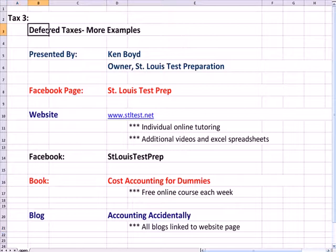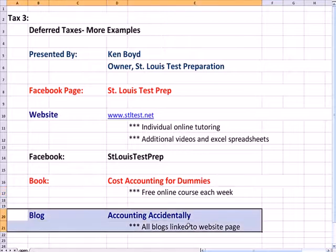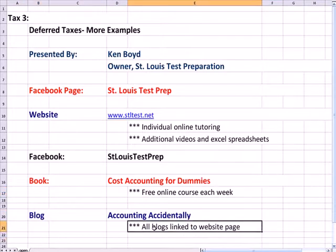That's as far as we'll get on deferred taxes. Deferred tax three. For individual one-on-one tutoring online, you can go to the website and also see additional videos, spreadsheets not on the web. Cost Accounting for Dummies, I teach in a free online course each week, online, it's on Saturdays, and the blog, Accounting Accidentally, is linked to my webpage. There's an automatic feed to the website. Thanks so much for watching, and we'll see you next time.